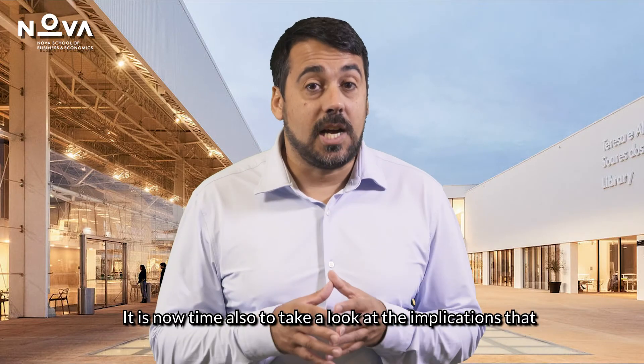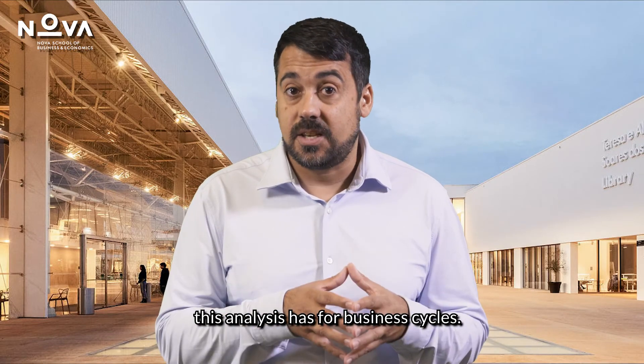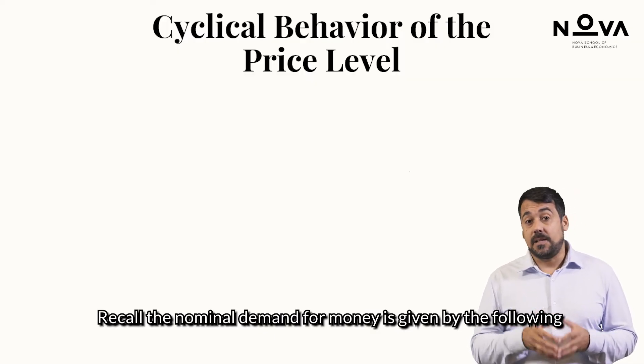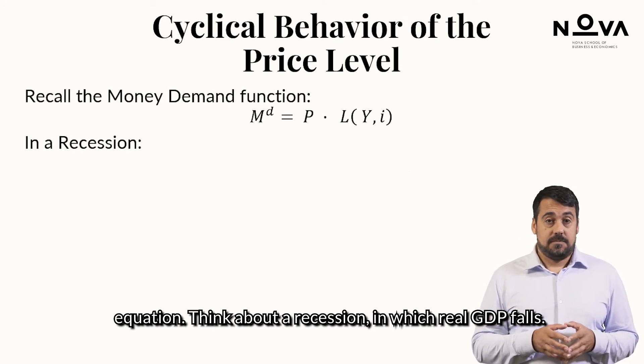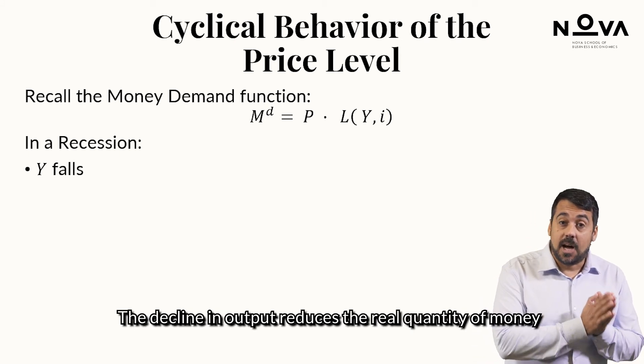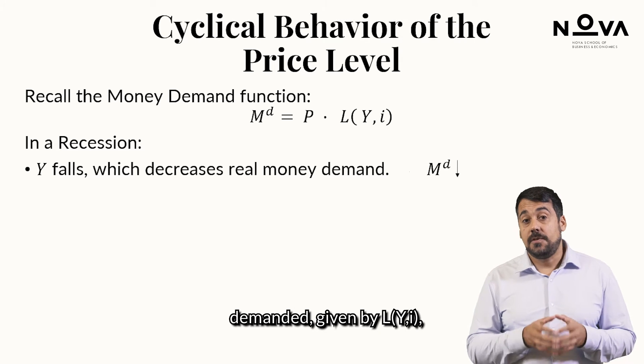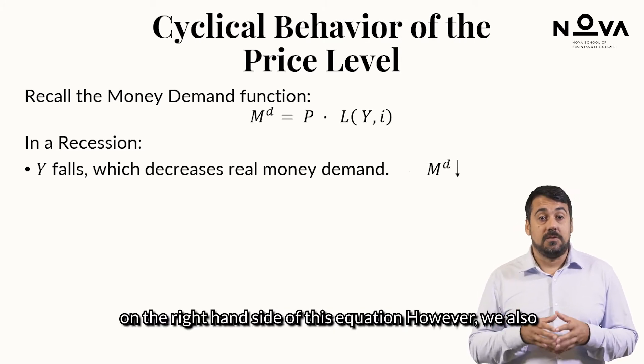It is now time also to take a look at the implications that this analysis has for business cycles. Recall the nominal demand for money is given by the following equation. Think about a recession, in which real GDP falls. The decline in output reduces the real quantity of money demanded, given by L on the right-hand side of this equation.